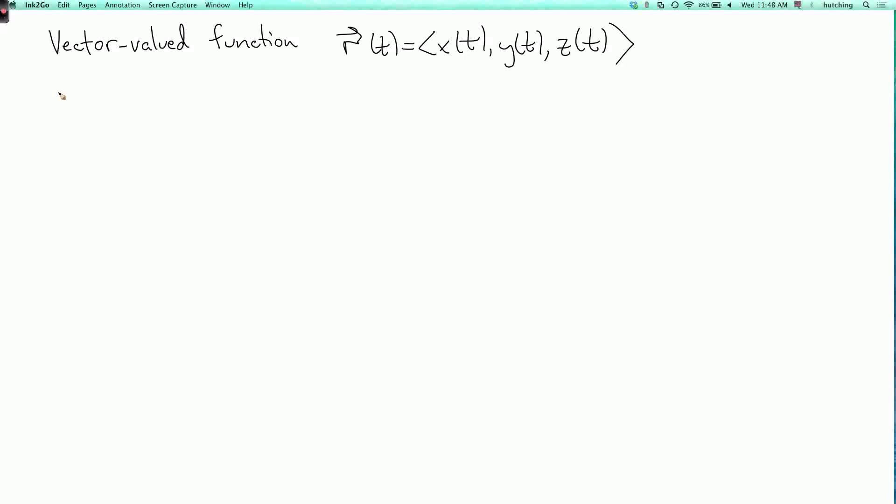Now an important definition is the velocity vector at time t. Now you already used the word velocity vector earlier, now let's give an official definition. So the definition is it's R prime of t, so think of it just as the derivative of R with respect to t, so it's the limit as epsilon goes to zero of R of t plus epsilon minus R of t over epsilon, if this limit exists.